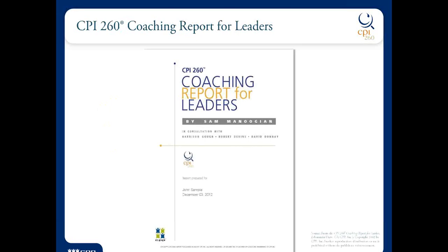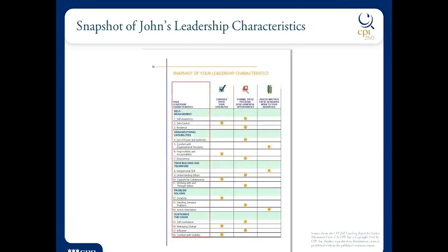Those were the two main developmental opportunities for John, and now I'd like to move on to the coaching report. There's his cover sheet. Any of you that attended our session will know that the first thing you do when you get a coaching report for leaders is go to page 14, and that's what I want to show you next. Here's John's page 14. You can see I've highlighted the column at the left — five core performance areas: self-management, organizational capabilities, team building, problem solving, and sustaining the vision, with 18 leadership characteristics layered underneath, clustered into those five areas.